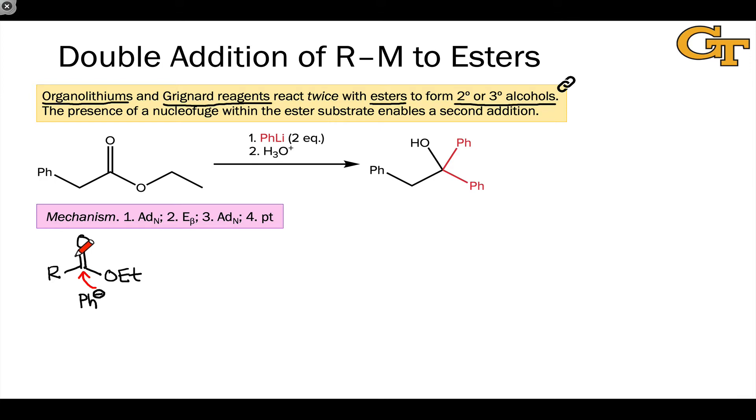The first step, as is typical for the reaction of an organolithium with a carbonyl compound, is nucleophilic addition to the polarized C=O pi bond. This results in the formation of a tetrahedral intermediate. And within this tetrahedral intermediate, we have a good electron source in the form of the anionic or alkoxide oxygen, and we have a group that has the potential to act as a leaving group, the OEt or ethoxy group.